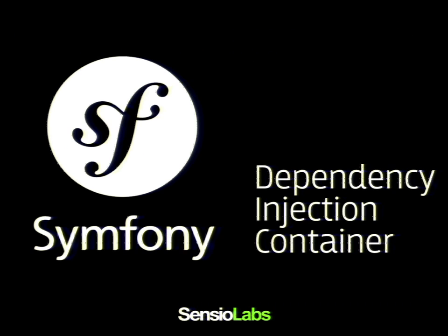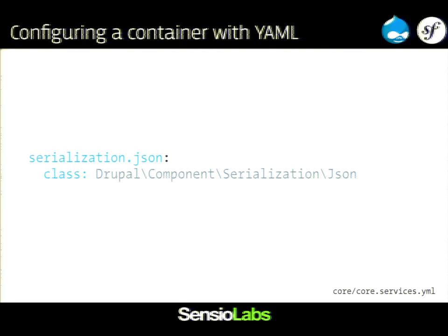I dived into Drupal 8 code, and here are some examples of services in Drupal 8. Drupal 8 uses the Symfony dependency injection container, and for the configuration it uses YAML — Symfony can use XML, YAML, and plain PHP, and Drupal 8 decided to use YAML. Here's a very simple example — a JSON serialization class. I'm just saying it's an instance of this class, no dependency, no arguments. So if you want to get this serialization.json service, then Symfony is going to create an instance of the JSON class without passing any arguments.